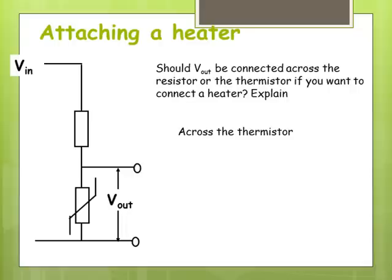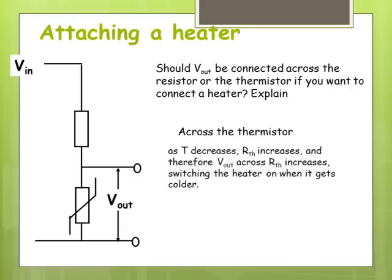So you want to attach it across the thermistor for the reason that we just said. How do we put that into words? I would say as temperature decreases, the resistance of the thermistor increases. Therefore, V out is going to increase across the thermistor and switch on the heater when it gets colder or when it reaches the required voltage. So I would put something like that on your cheat sheet because you can usually adapt it to answer the question, but make sure it answers the question they're asking. Otherwise, you'll get penalized.